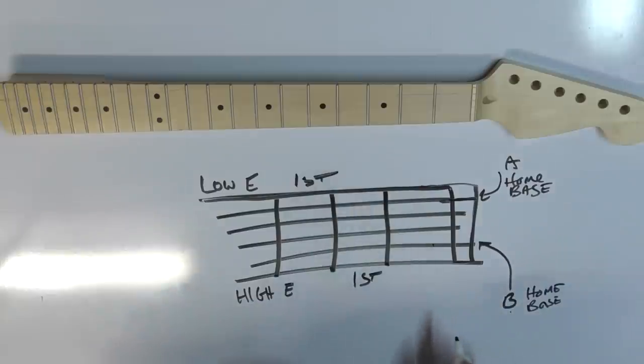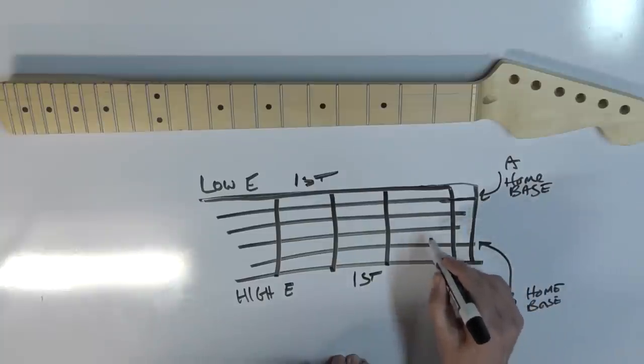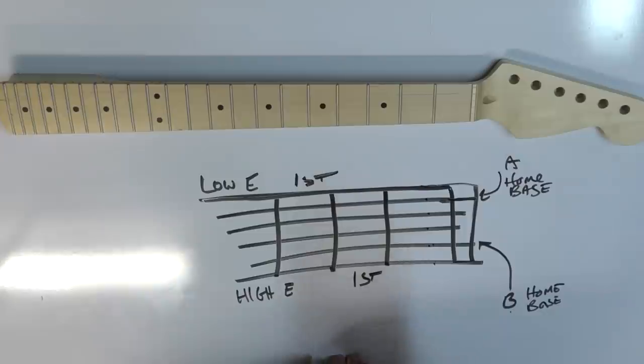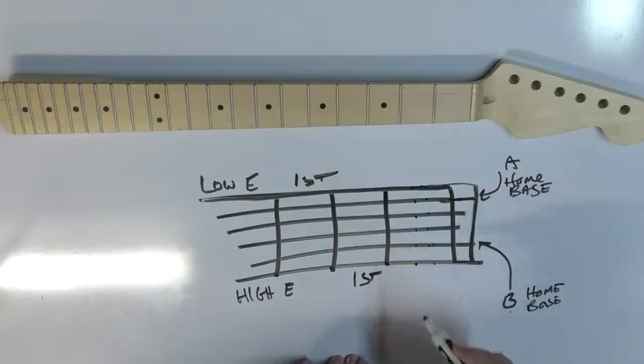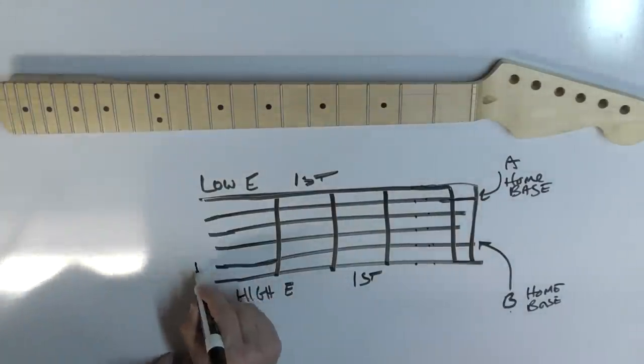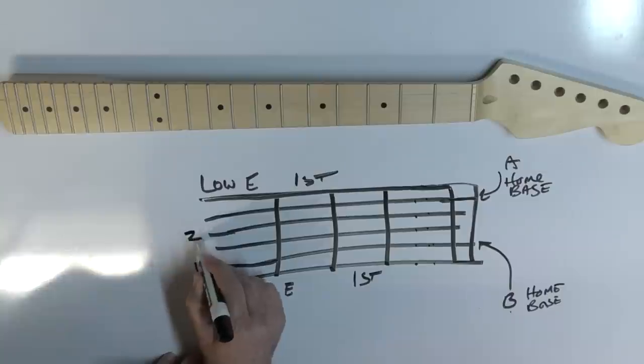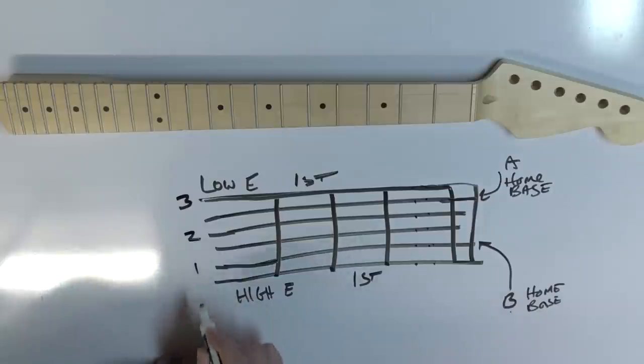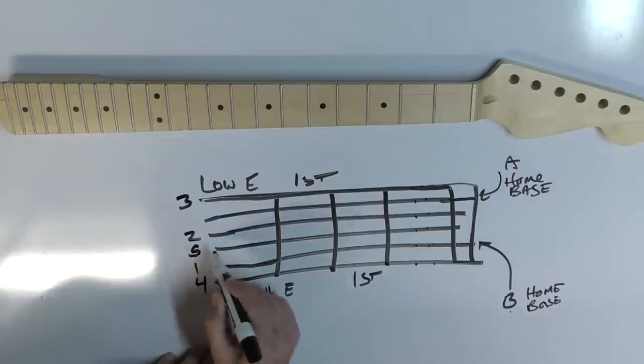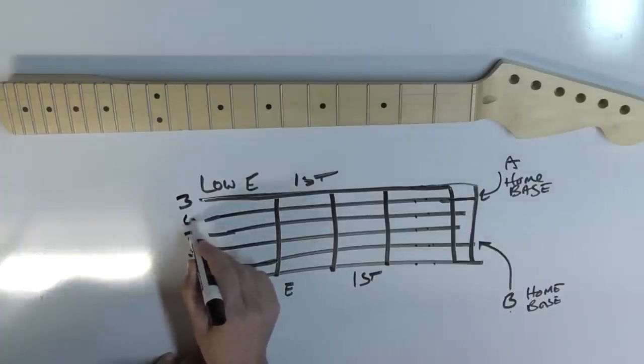Now, what I want you to do is instead of thinking of the strings as 1, 2, 3, 4, 5, 6, or 1, 2, 3, 4, 5, 6, I want you to think of it like this. 1. We're going to skip 1. 2. We're going to skip 1. 3. Then we're going to come back down here. We're going to say 4. We're going to skip 1. We're going to say 5. We're going to skip 1. We're going to say 6.